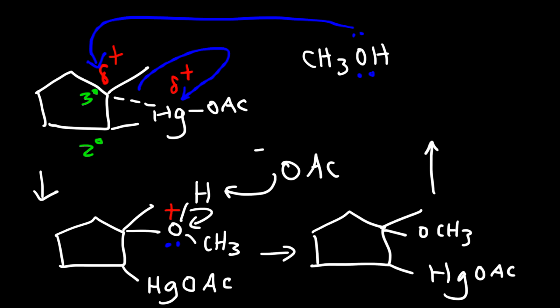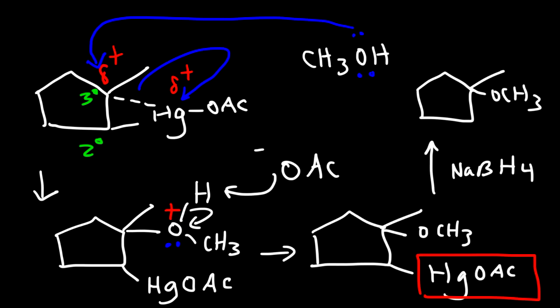So now we need to use sodium borohydride. And this reagent is going to replace the mercury group with a hydrogen, giving us our final answer. So that's the basic idea behind the alkoxymercuration-demercuration reaction. Now let's go ahead and work on some example problems.